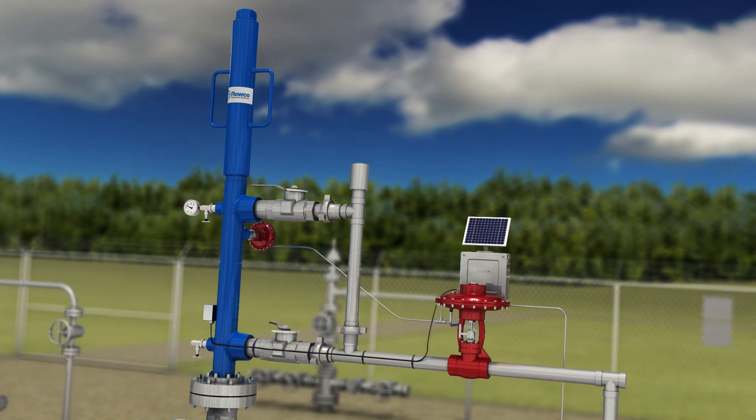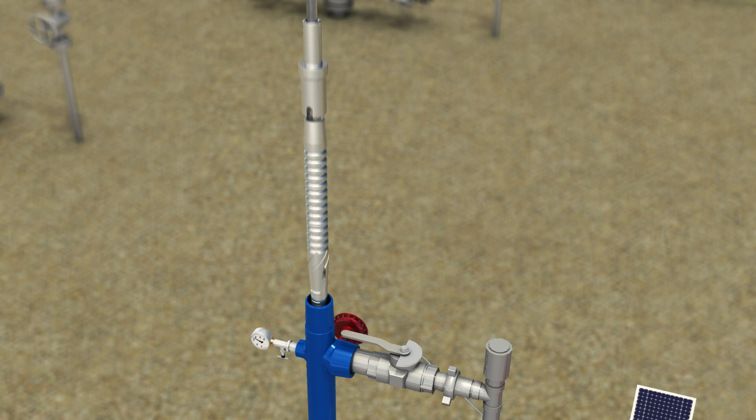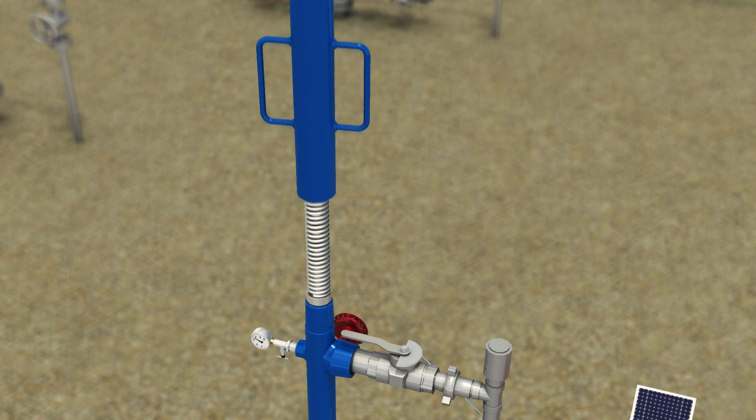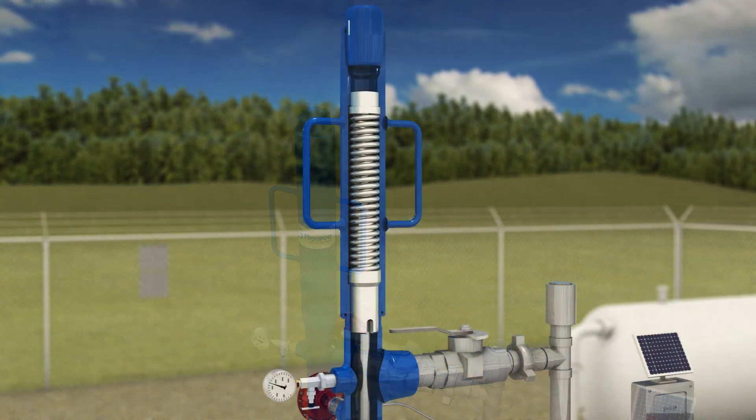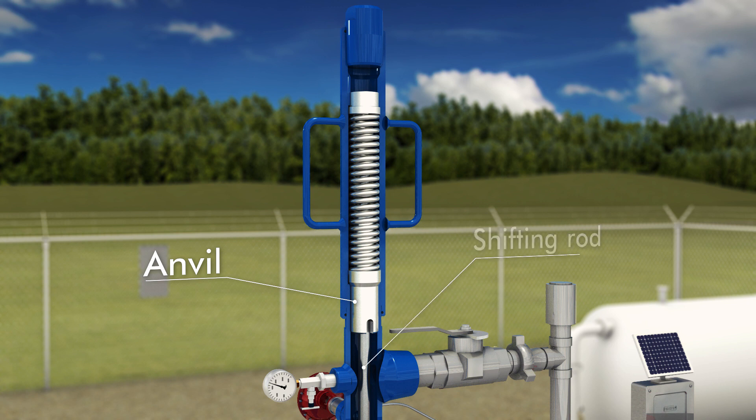The lubricator is installed on the wellhead and acts as the plunger receiver upon arrival. The cap of the lubricator can be removed to install or inspect the plunger. Inside the lubricator is an anvil, a shifting rod, a plunger spring, and a rod spring to cushion the force of the arriving plunger.